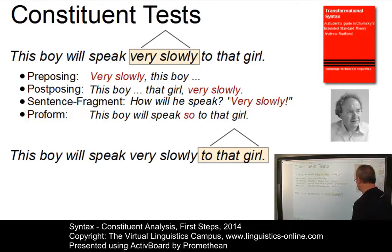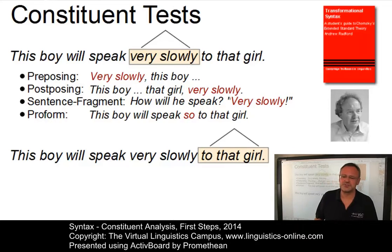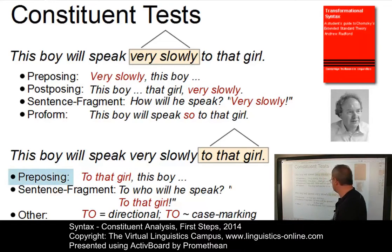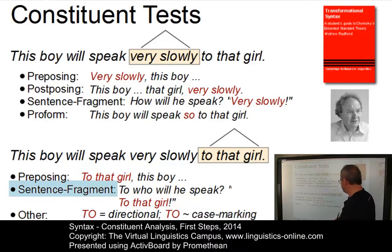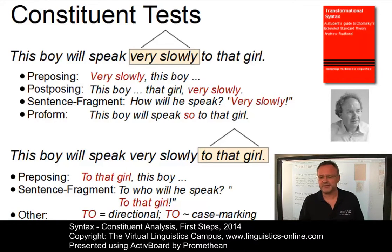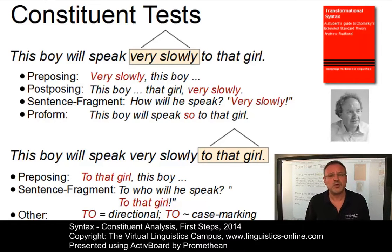Or take 'to that girl' — another constituent. Even though fewer tests apply here, we have reasons to believe that 'to that girl' is a constituent. We can pre-pose it: 'to that girl, this boy will speak very slowly.' We can use it as a sentence fragment: 'To who will he speak? Well, to that girl.' There are also semantic tests where 'to' is directional and in many languages assigns a particular case to other constituents. So with constituent tests of this kind, we can justify the hierarchical organization of sentences, and the method to work out such hierarchies is referred to as constituent analysis.